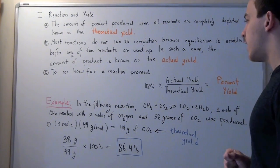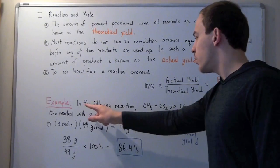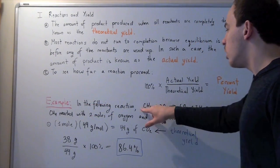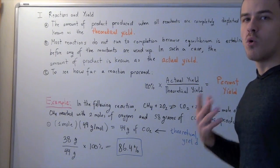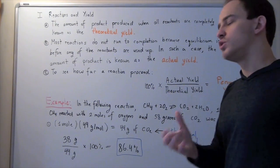Now, let's look at the following reaction. In the following reaction, one mole of methane reacts with two moles of oxygen to produce one mole of carbon dioxide and two moles of water.